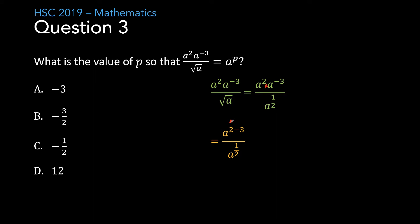That leaves me with 8 to the power of 2 minus 3 over 8 to the power of a half. The fraction bar represents division so now I have a to the power of 2 minus 3 take away half leaving me with 8 to the power of negative 3 on 2. We wanted to get it into the form of a to the p and I now have it in that form. So I've got p is equal to negative 3 on 2 and that leaves me with the answer B.